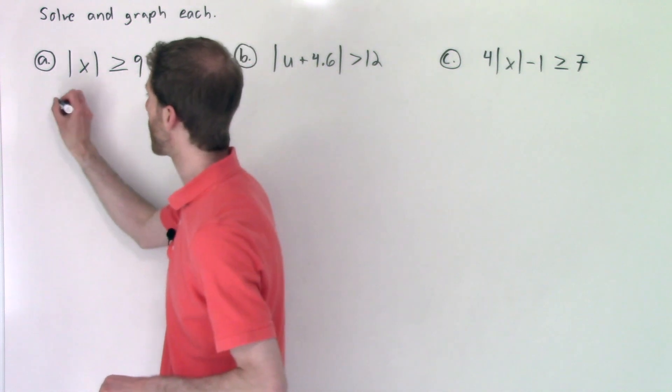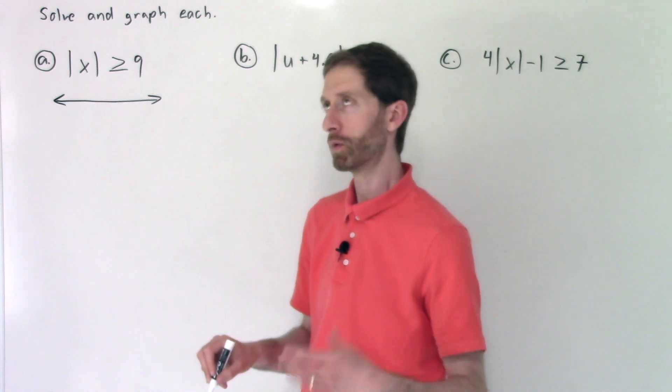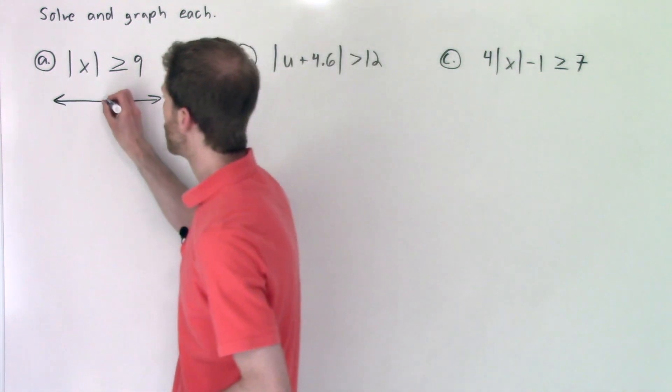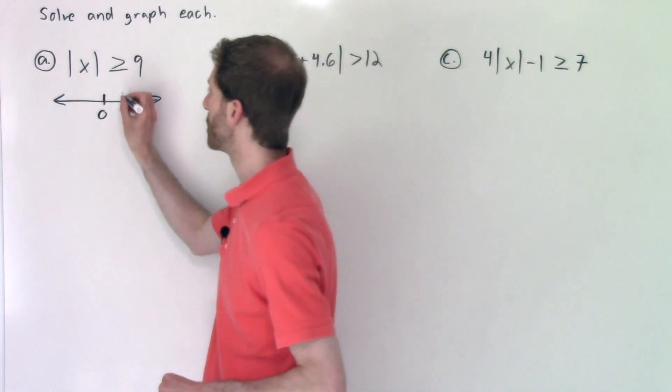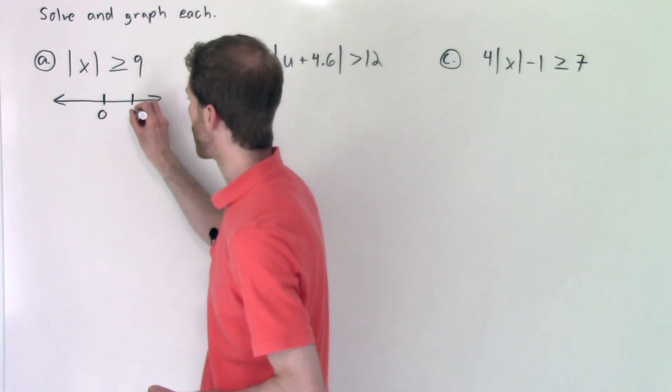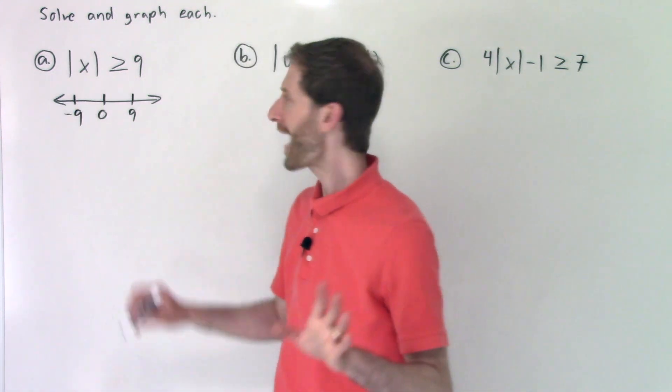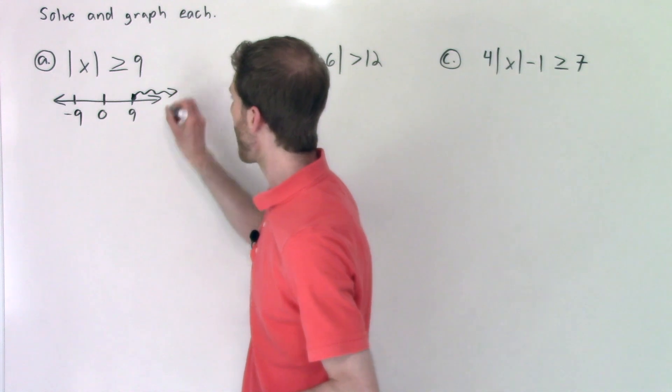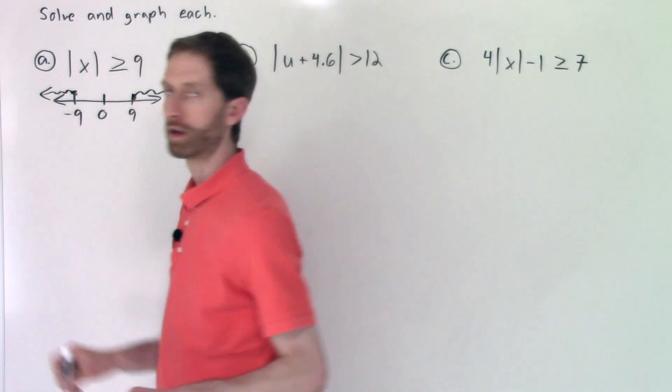Well, again, I like to visualize graphing and I say again because I do this in other inequality absolute value videos. I'm visualizing, I'm saying the distance that X is from zero is more than or equal to nine. Well, that means that we're at nine or farther away at negative nine or farther away, right?